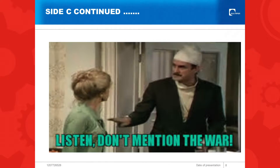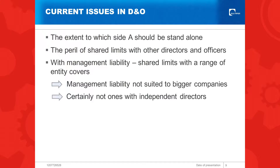So side C flared up with massive losses in the early 2000s, then it was withdrawn from the market, and it's come back in terms of entity cover. It's sort of like 'don't mention the war' in relation to that side C — if you can remember that fantastic episode of Fawlty Towers when the Germans stayed. Current issues in D&O: firstly, the extent to which side A should be standalone; secondly, the peril of shared limits with other directors and officers. With management liability, the issue is that those shared limits are not only with a range of other directors, but a range of entity covers as well. Generally management liability is not suited to bigger companies, certainly not ones with independent directors.